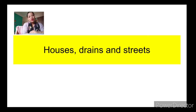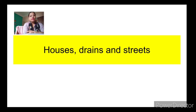Good morning, dear students, and welcome to our social science class. Today we are going to study about what we have already started — the Harappa chapter, how the Harappan city was discovered, and the various types of cities found. There are two types of divisions: the citadel and the lower town. Today we will study about the houses, drains, and streets of Harappa.